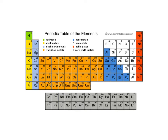The first thing we need to talk about is the difference between an element versus a compound. An element is something that cannot be broken down any further than it already is — elements cannot be broken down by chemical reactions. There are 92 naturally occurring elements, all found on the periodic table.